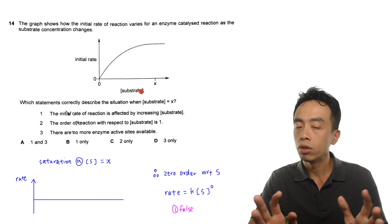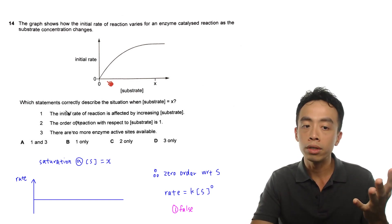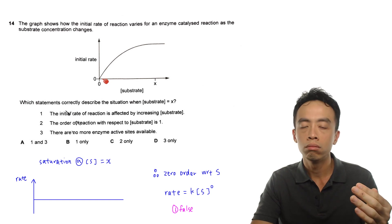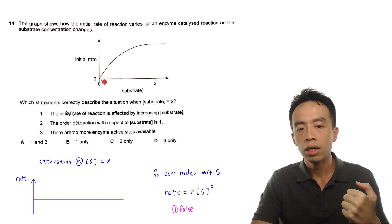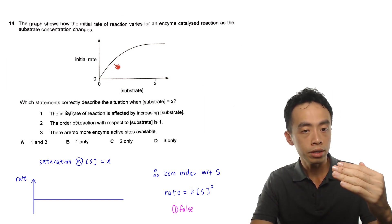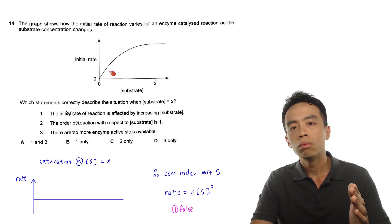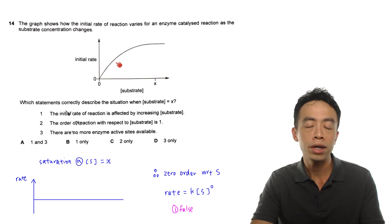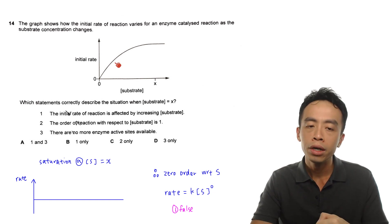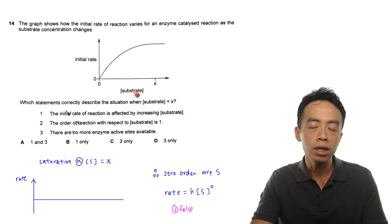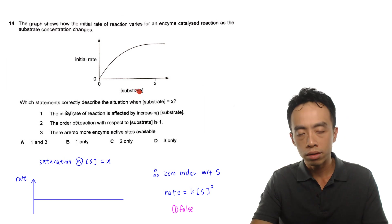What we notice is at the beginning when the concentration of the substrate is very low, then as you add more and more substrate, the rate of the reaction increases more or less linearly. We will comment on the order of the reaction with respect to the substrate subsequently.